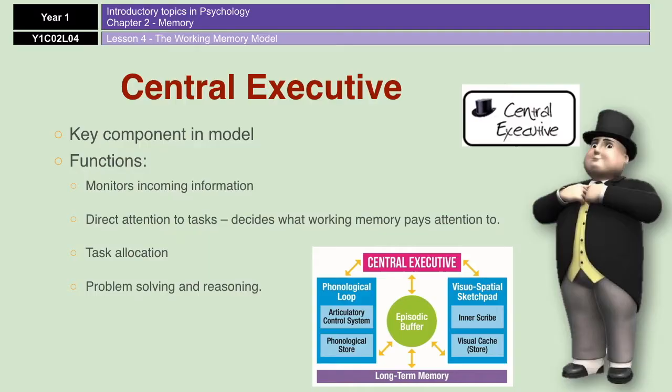The central executive also directs attention. If you imagine you're driving a car and talking to somebody, and then all of a sudden you see a cyclist cycling along the road, your central executive might say: right, we're going to divert some attention away from the talking and concentrate on not hitting the cyclist. So the central executive will give priority to particular activities as and when needed. It's also all about problem-solving, decision-making, and reasoning.